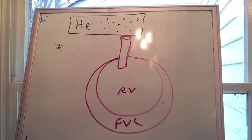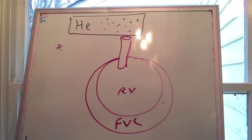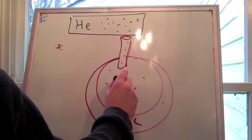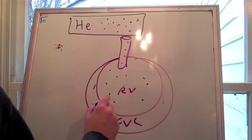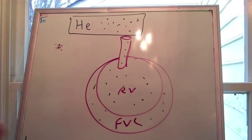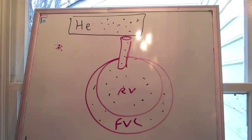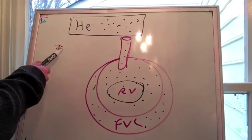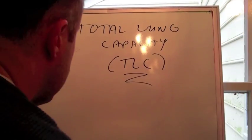The other method is this helium or nitrogen dilution. And essentially, you have a known concentration of helium in a tank. You have the patient breathe in. And that helium kind of disperses and equalizes everywhere. And you know your starting concentration and your ending concentration in your canister. So that allows you to measure the volume.